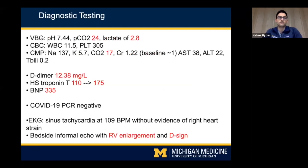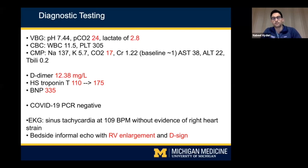Lab work in the ED included a venous blood gas demonstrating a pH of 7.44, PCO2 of 24, and a lactate of 2.8. His CBC was overall unremarkable. His comprehensive panel showed some hyperkalemia and a bicarbonate of 17. D-dimer was elevated at 12. High-sensitivity troponin T was initially 110, uptrending to 175 at two hours. BNP was 335. COVID PCR was negative.